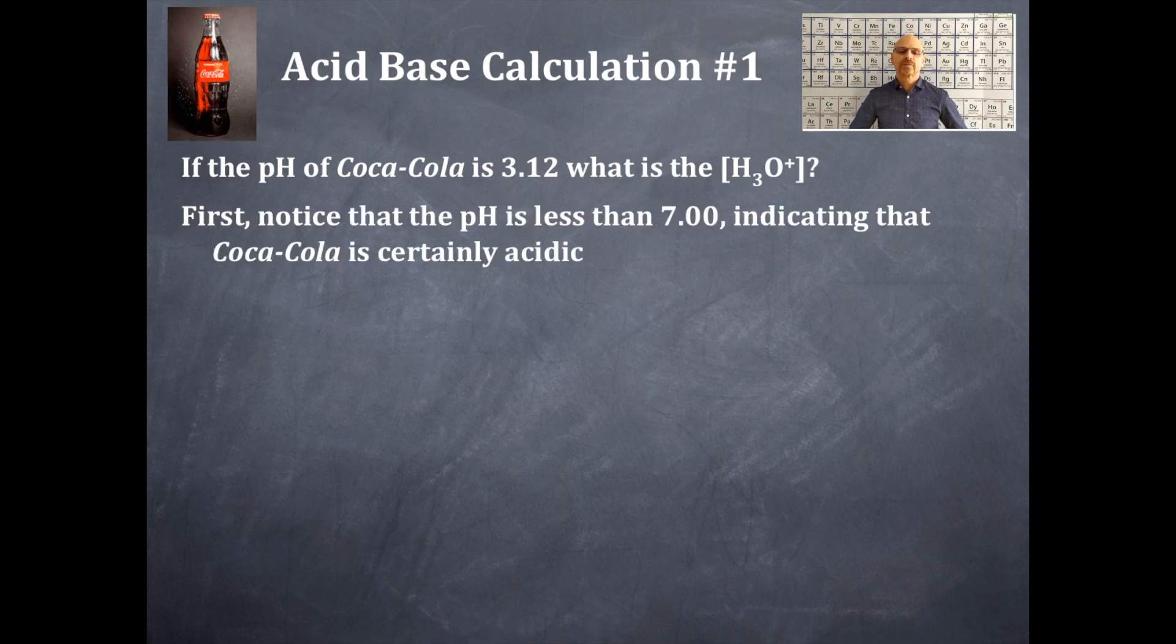So first of all, I hope you notice that the pH is less than 7. If the pH is less than 7, that is indicating that Coca-Cola or any pH less than 7 is acidic. Okay? Alright.